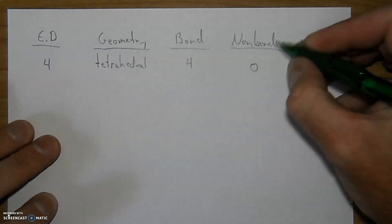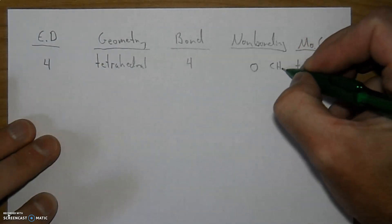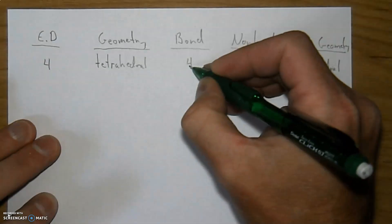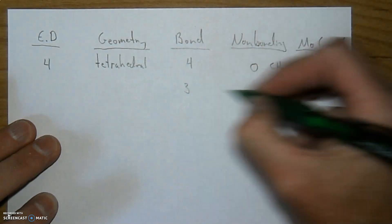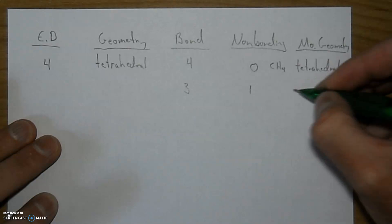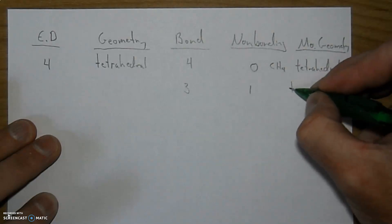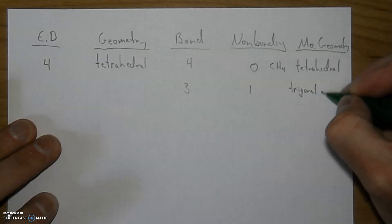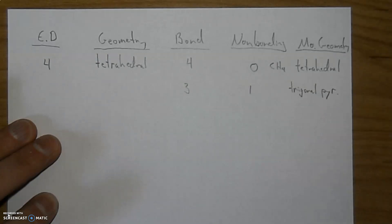A classic example would be like methane. If we remove one of the bonded pairs and put in a non-bonding lone pair of electrons, that's going to give us a shape which is called trigonal pyramidal.